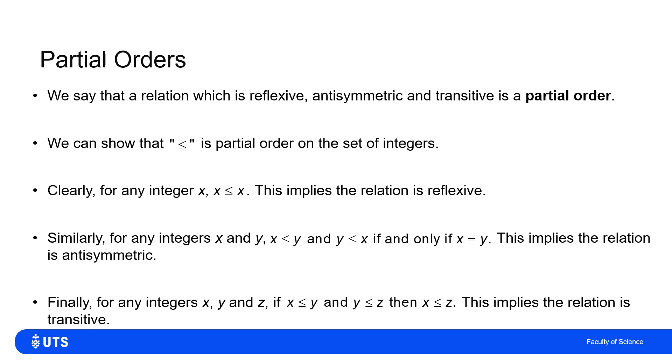And if X is less than or equal to Y and Y is less than or equal to Z, then X is less than or equal to Z. So here we have that we have transitivity as well. So the less than or equal to relation is a partial order. Similarly, also is the greater than or equal to.